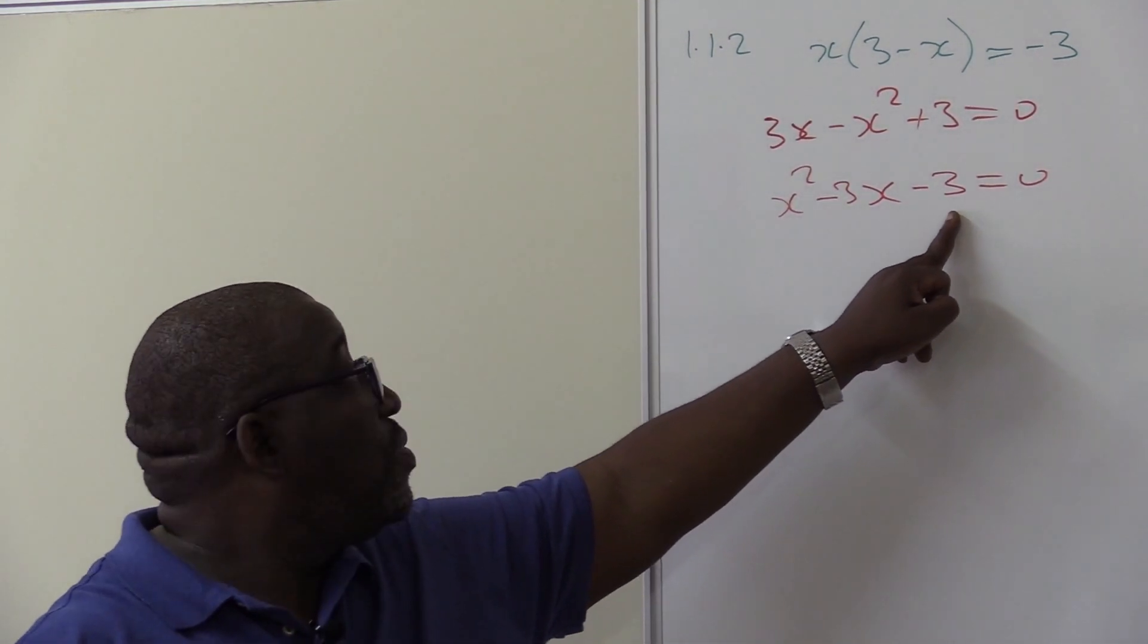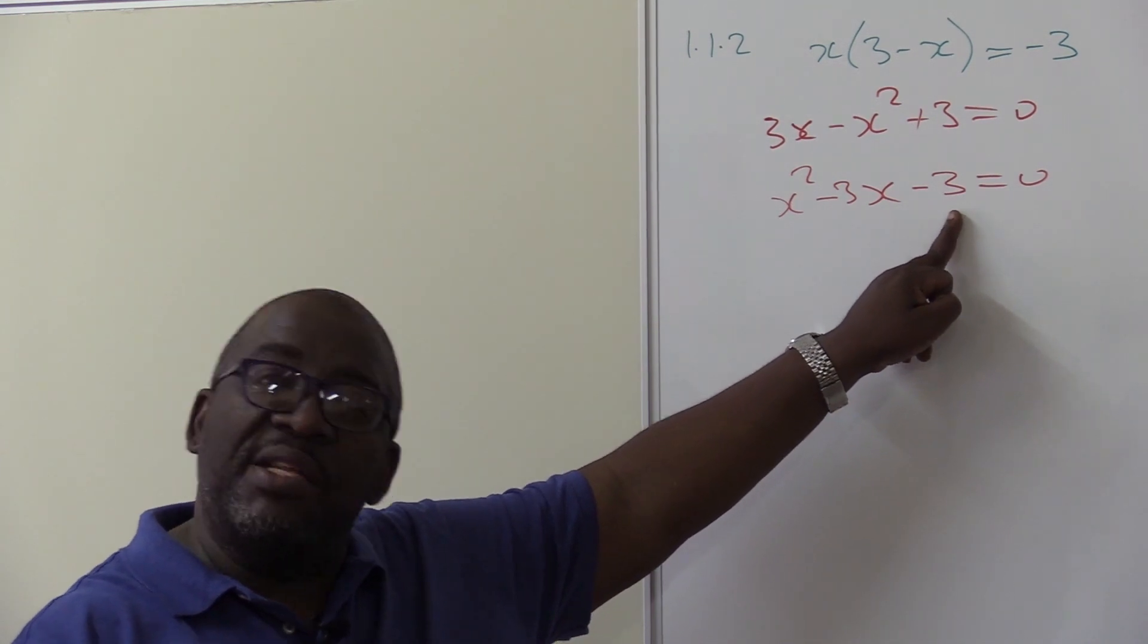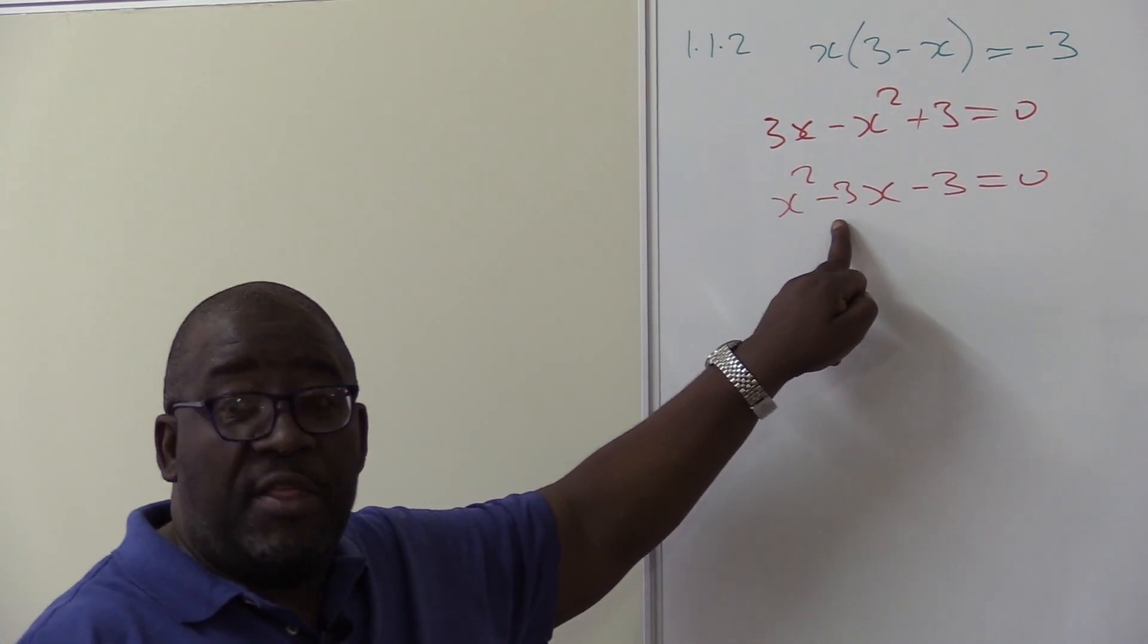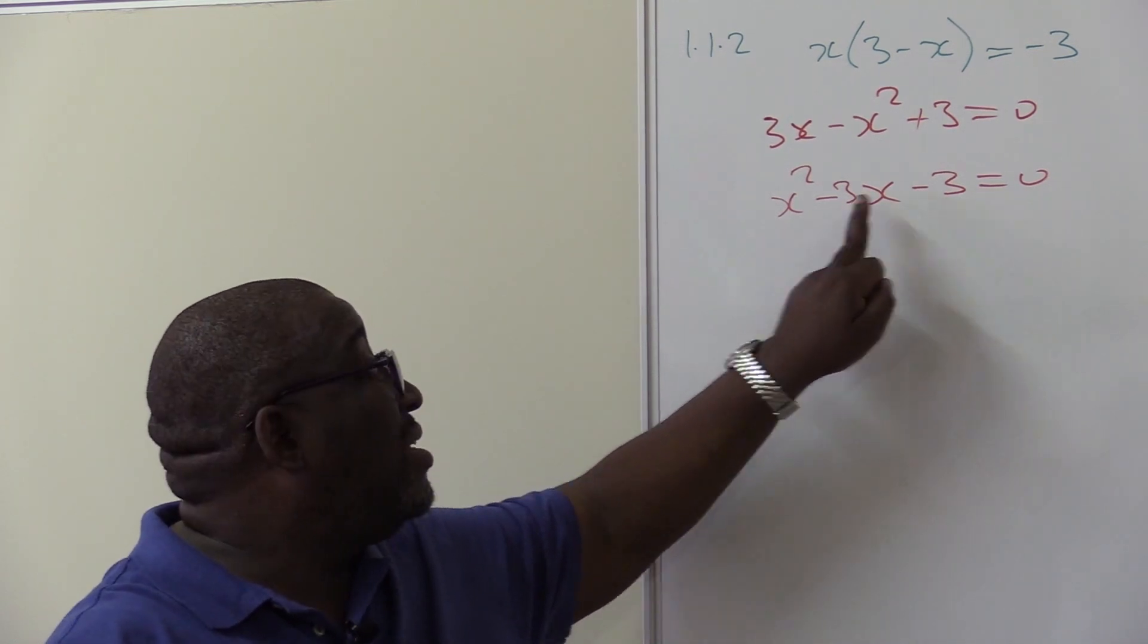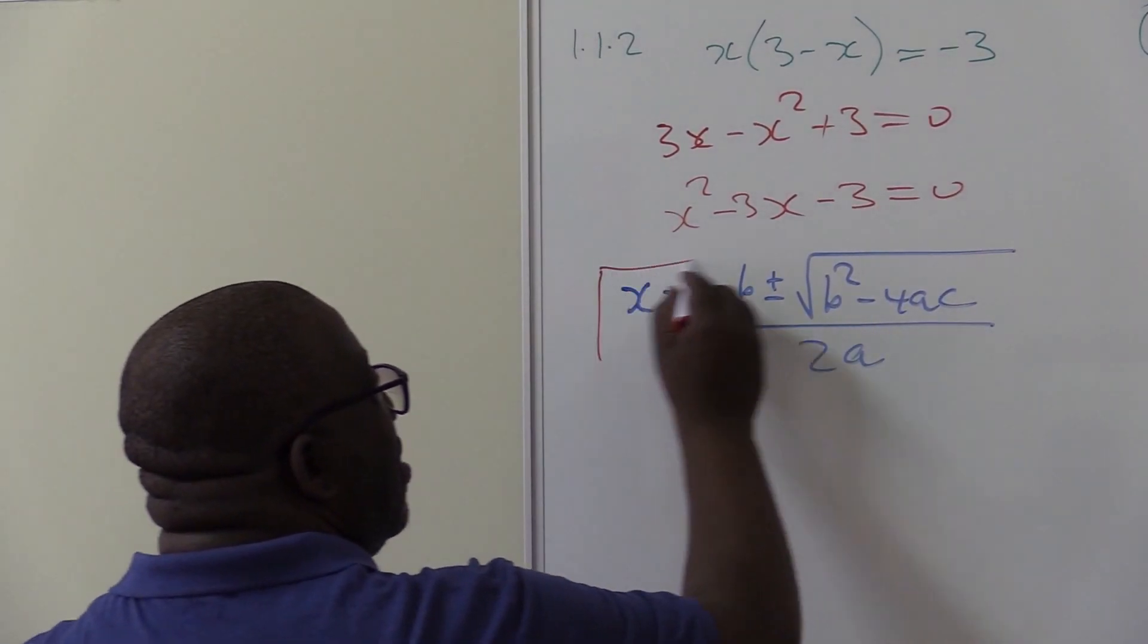Can we factorize? Factors of three are three and one. There is no way where you can add the three and one and you get three. There is no way when you can subtract or add three and one and get three.